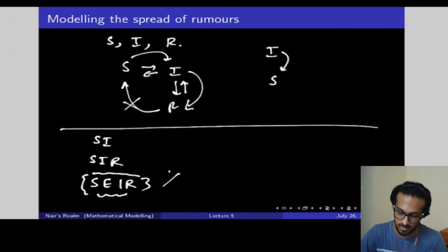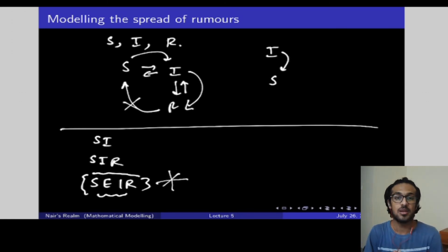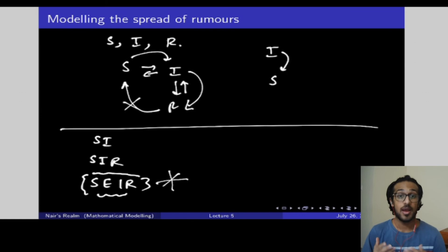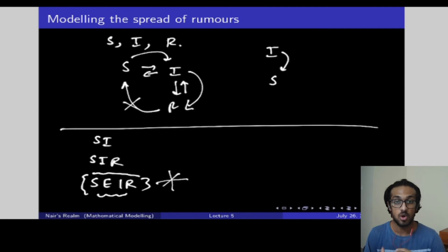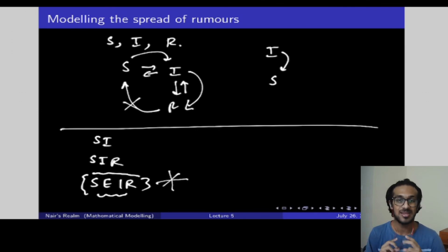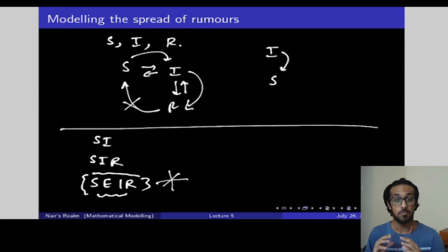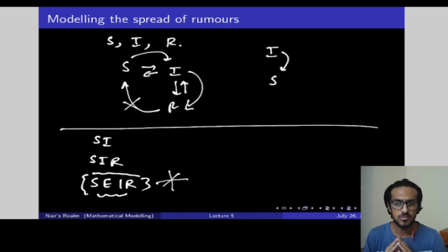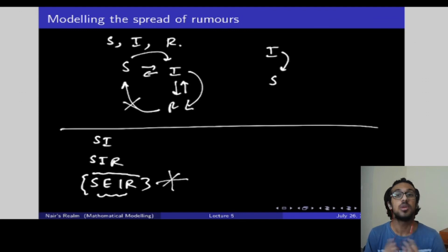The SEIR model is super important, so I highly suggest you read up a bit about the SI and SIR models and drop a comment if you have any doubts. I hope you enjoyed this video on how you can use the SI and SIR models for modeling the spread of rumors, what assumptions we make, and so on. In the next video we'll be dealing with the SEIR model, and after that we'll start building our own models with very few assumptions that can get quite complex. Thank you so much for watching, and I'll see you next time!